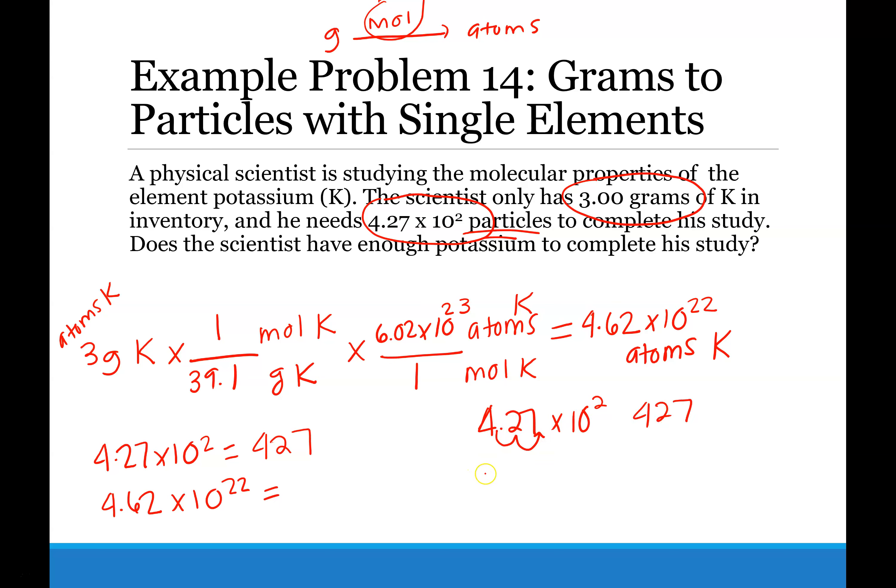So imagine 4.62 times 10 to the 22nd. So 1, 2, 3, 4, 5, 6, 7, 8, 9, 10, 11, 12, 13, 14, 15, 16, 17, etc, etc. I don't have enough space on the page to go 22 out, and each one of these would be filled with zeros all the way down.